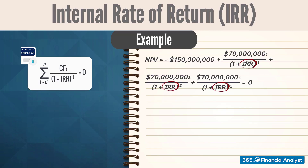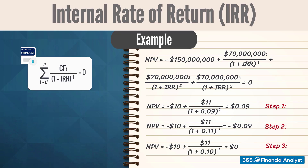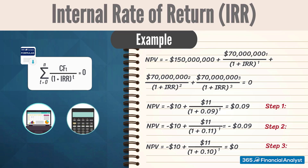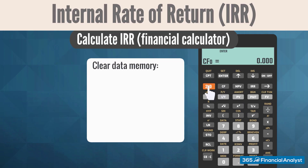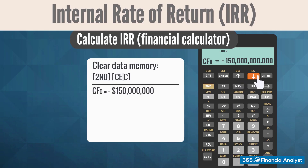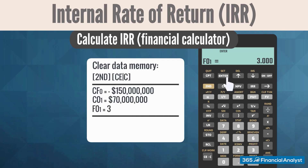By substituting the parameters, we obtain the following equation — the only unknown is IRR. In our previous example we used a trial-and-error method, which is time-consuming and ineffective, especially when the number of cash flows increases. In reality, analysts use spreadsheet software or financial calculators, which makes it much easier. Let's demonstrate using the Texas Instruments BA2 Plus calculator. We enter cash flow mode by pressing CF, clear the data memory by pressing 2nd, CE/C, then enter the relevant data. Cash flow 0 is negative $150 million, C01 equals $70 million. Instead of entering the next two flows manually, we change the cash flow frequency from 1 to 3 because their amount is the same as the first cash flow. We press IRR and compute — the result is 18.91%, rounded to the second decimal point.